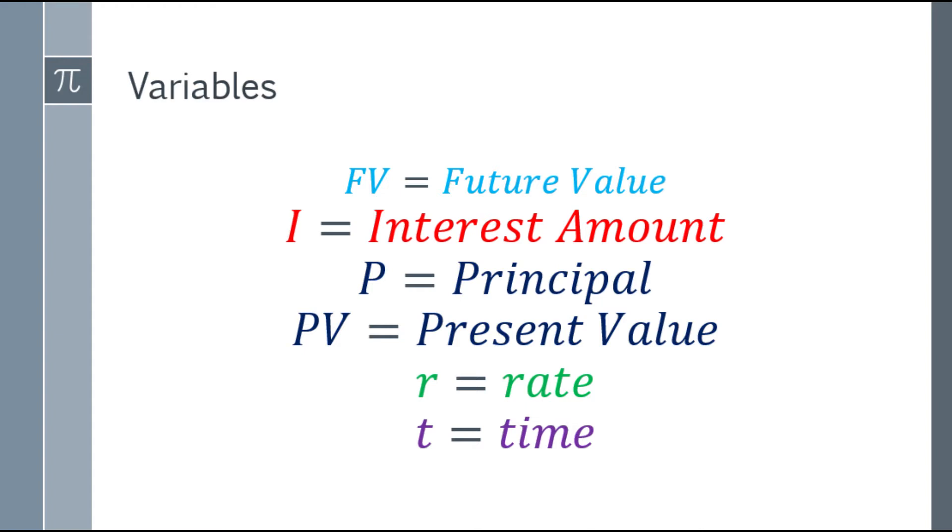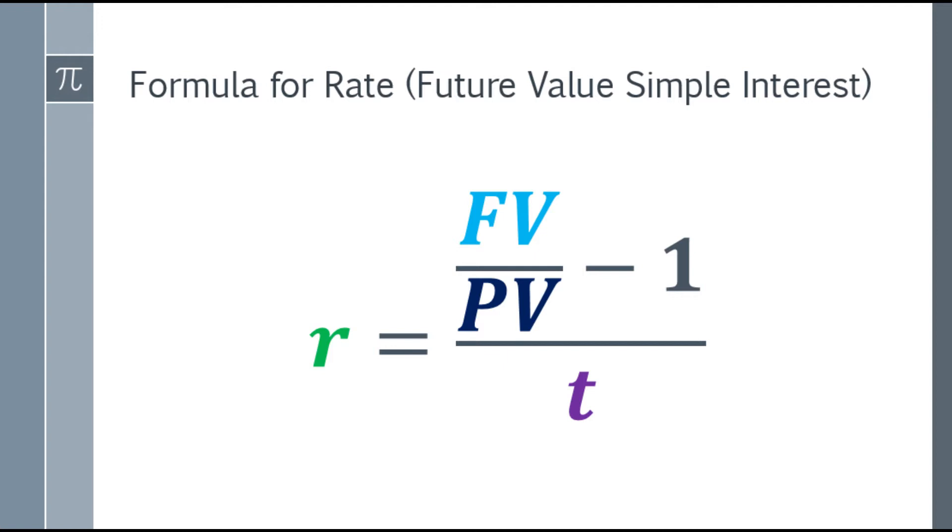The formula for rate in future value simple interest format is R equals FV over PV. The answer to that, you minus by 1, and the final numerator answer you divide by the denominator, which is the time.